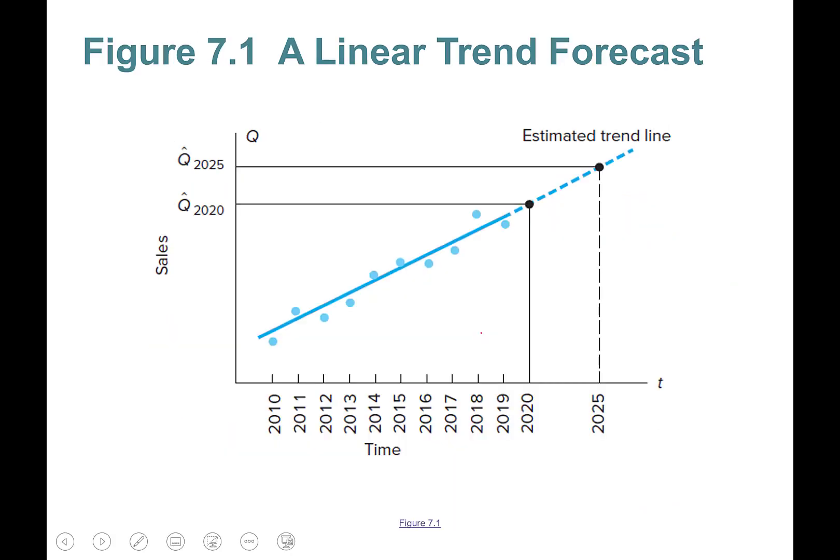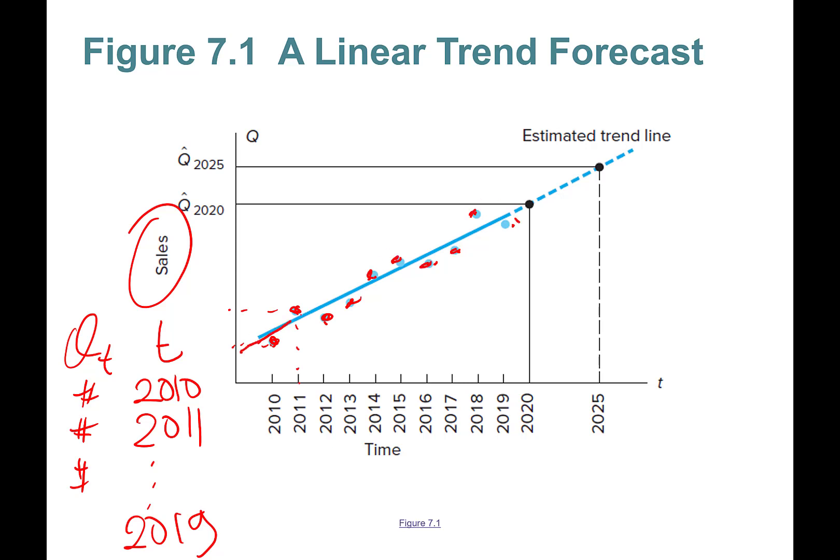An example is this company sales. The data looks like this - Qt and T is here: 2010, 2011. You can code data. 2019 is the last data point. You have one through ten points with corresponding sales figures. You estimate this line using regression and for the future, 2020 and any future period, you can actually find the estimated trend line.